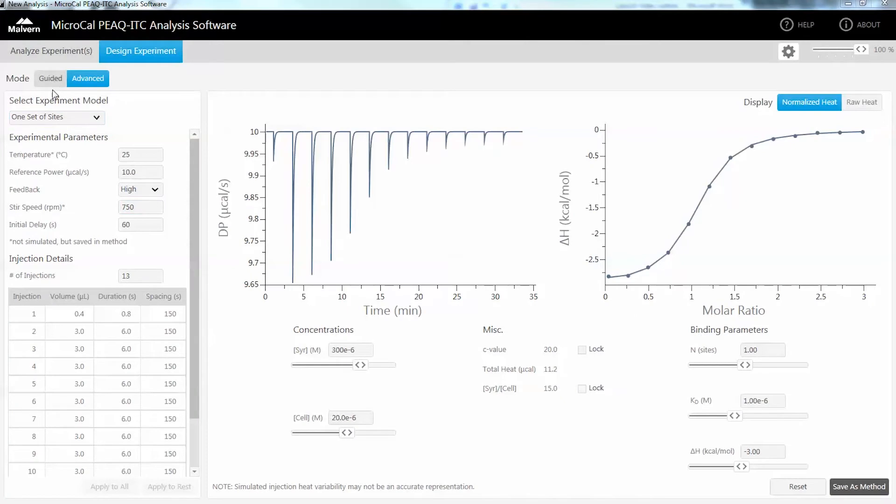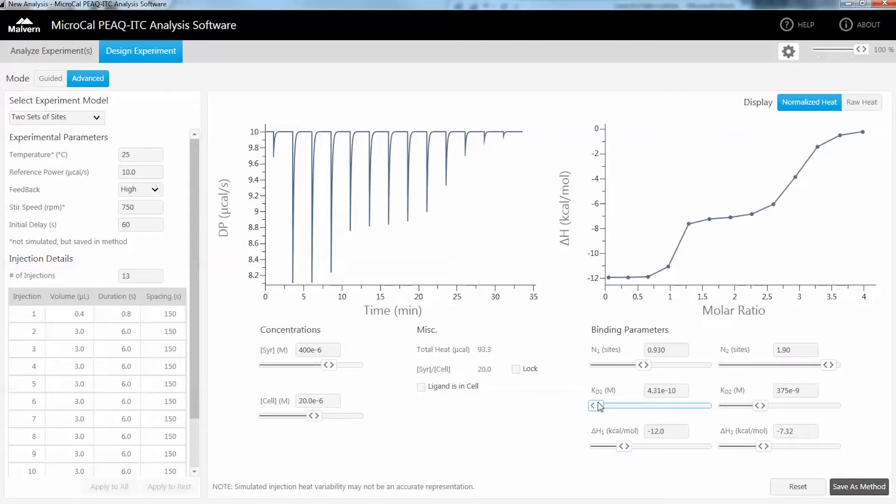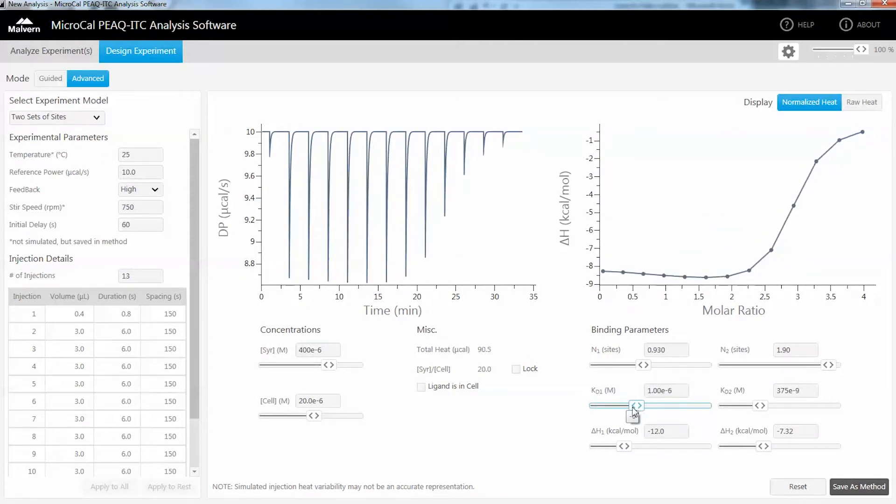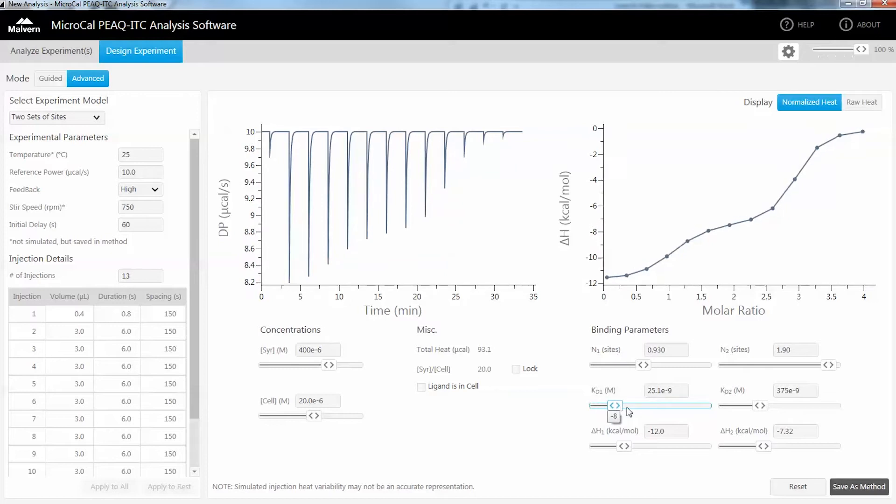When sample is precious or low concentrations are needed to accurately measure low nanomolar affinity interactions, or when the complexity of experimental design is significant, for example, in the case of competition titrations or binding interactions other than one-to-one, our advanced built-in experimental design tool facilitates the optimization of these experiments.